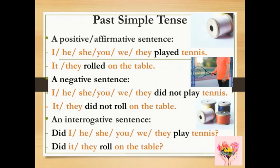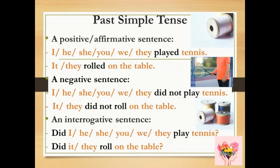An interrogative sentence: 'Did I, he, she, you, we, they play tennis?' 'Did it or they roll on the table?' بالنسبة للماضي البسيط في حالة المثبت الفعل الرئيسي يكون في حالة الـ ed. وفي حالة النفي والاستفهام نستخدم الفعل المساعد did والفعل الرئيسي دائماً يكون في حالة المصدر.